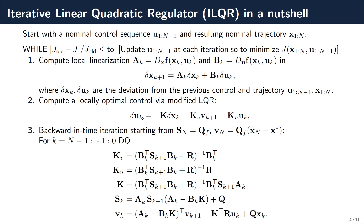The update to the control delta U_k gets added to the previous control and has three contributions: one from minus K times delta X_k, which is the classical state feedback. But there are also two auxiliary contributions from an auxiliary state V and from the control itself. To compute these gains K, K_B, and K_U, we need a backward-in-time iteration starting with terminal conditions for S_N and V_N, inverting the same matrix at each step. We compute S_k once we have S_{k+1}, then update V_k, counting down from the terminal to zero to obtain the updated control sequence delta U_k.